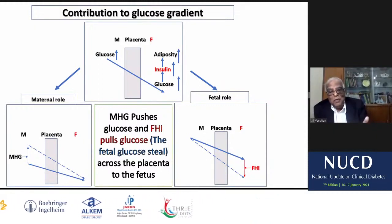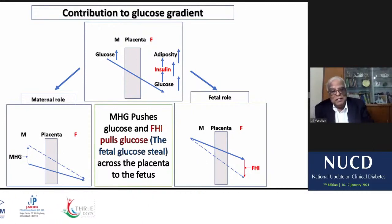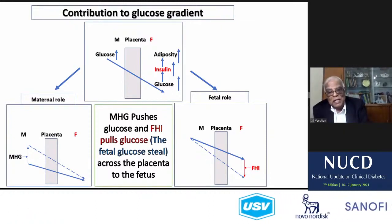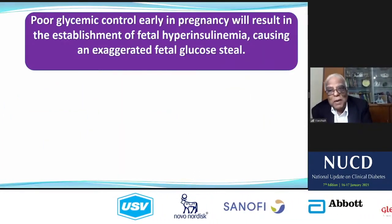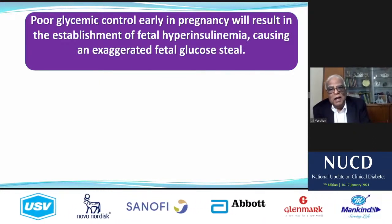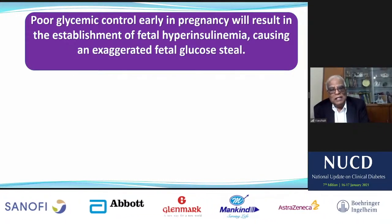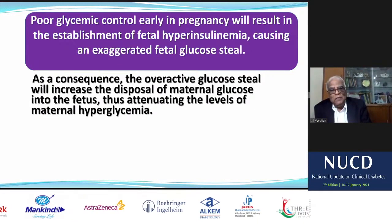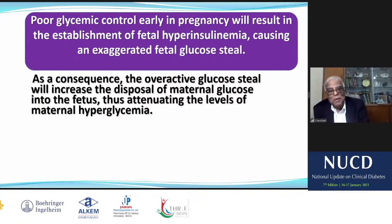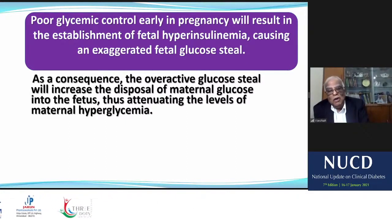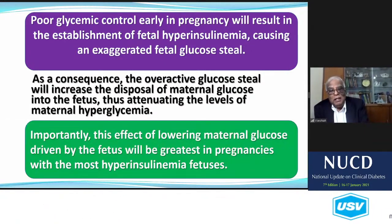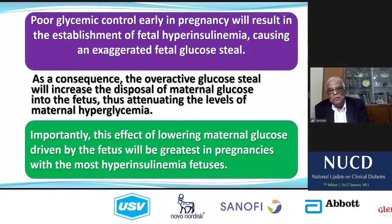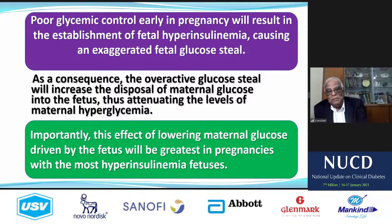That is what we call poor glycemic control. Early in pregnancy, this results in the establishment of fetal hyperglycemia causing an exaggerated fetal glucose steal. As a consequence, the overactive glucose steal will increase the disposal of maternal glucose into the fetus, thus attenuating the levels of maternal hyperglycemia. Mother's glucose goes into the fetal compartment, causing a lower level of maternal hyperglycemia. The effect of lowering maternal glucose, driven by the fetus, will be greatest in the most hyperglycemic fetus.